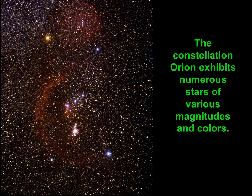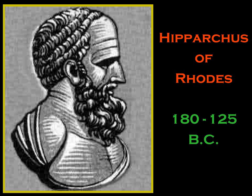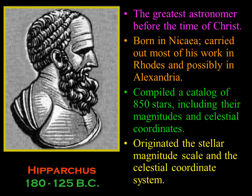Hipparchus of Rhodes was an ancient Greek mathematician and astronomer who lived from about 180 to 125 B.C. — the greatest astronomer of his time. He was born in Nicaea, now the modern city of Iznik in Turkey, and did most of his work on the island of Rhodes. He put together the first catalog we would consider modern-style: about 850 stars with their magnitudes and celestial coordinates. He started the stellar magnitude scale and the celestial coordinate system.